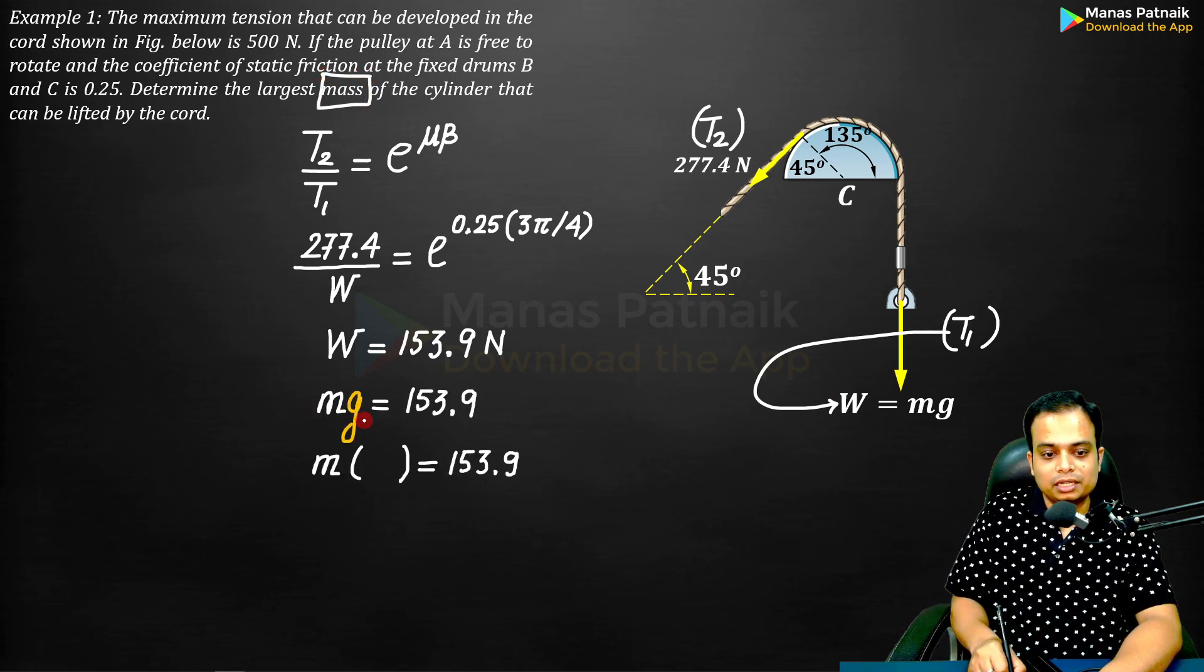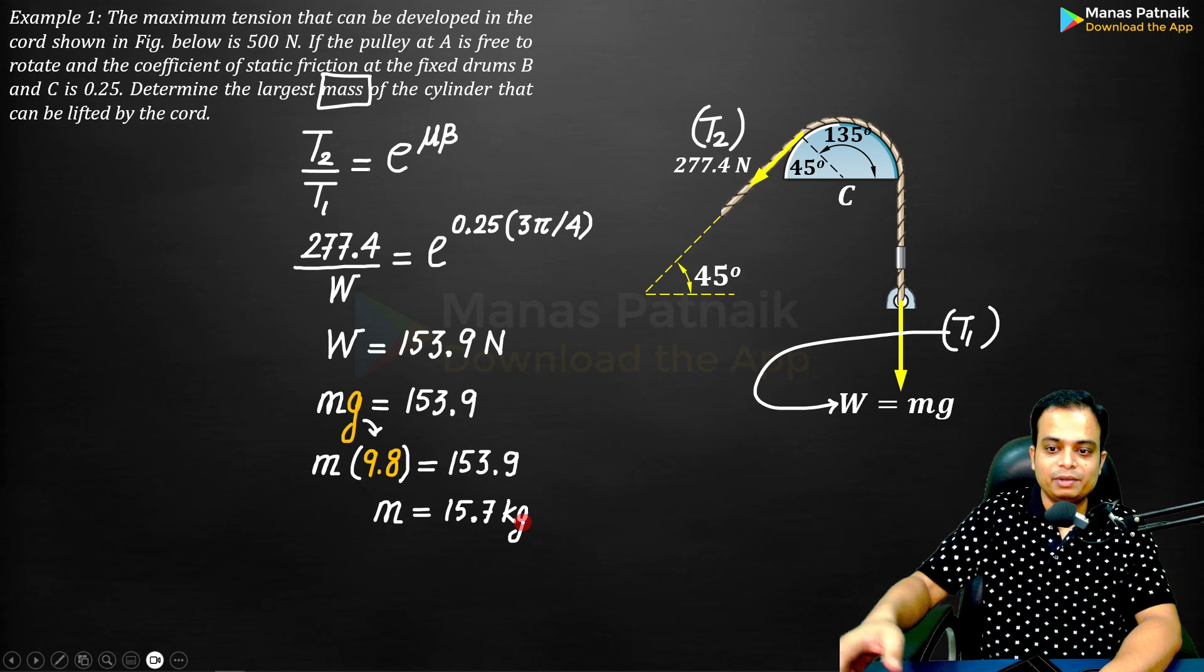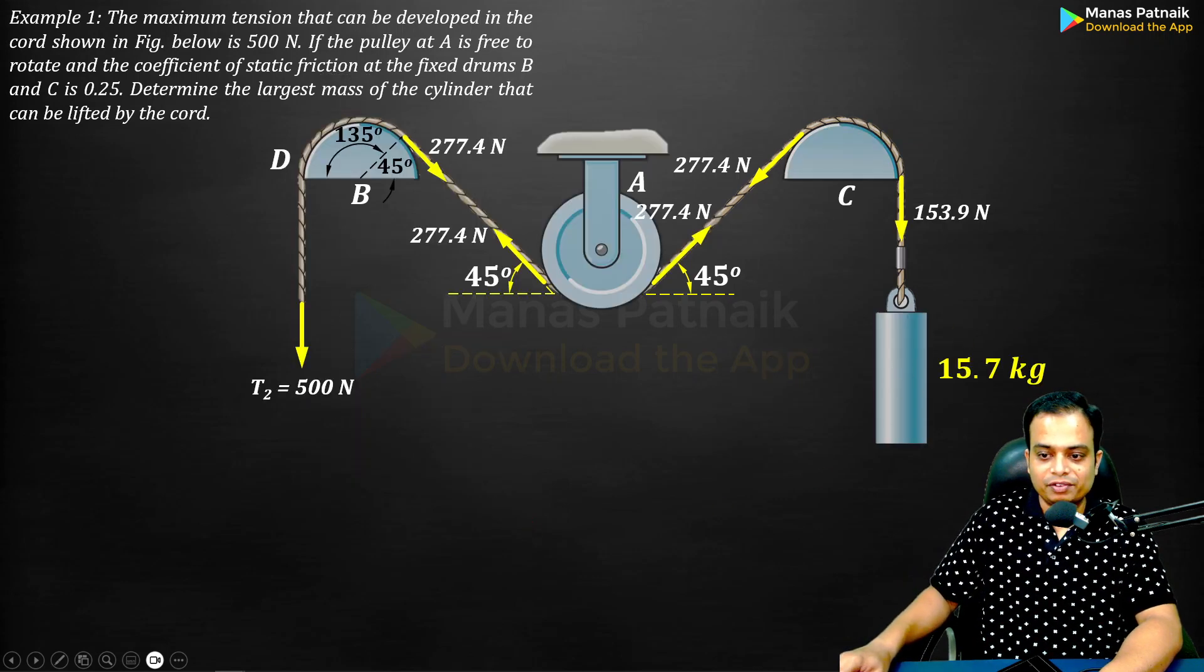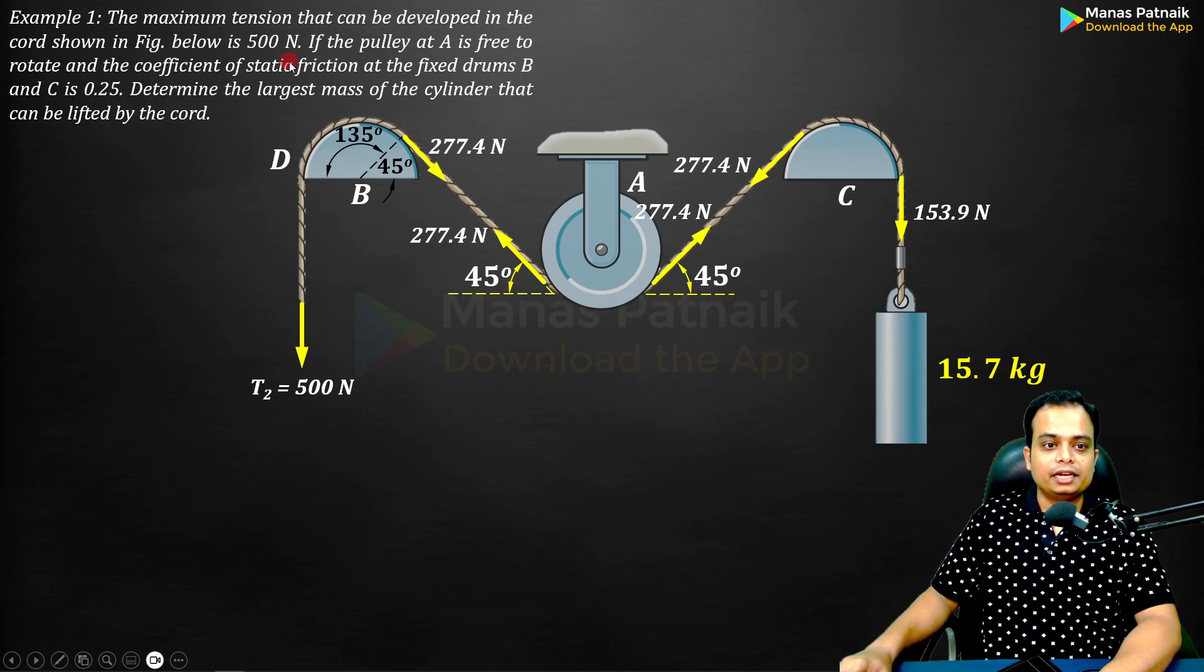What do we need? We need the mass. W equals mg and g equals 9.81. Just plug in the value: mass is 15.7 kg. This is the mass of the cylinder which this chord is able to lift, ensuring that the maximum tension developed is not more than 500 newtons.